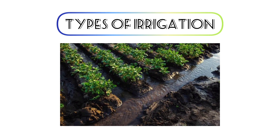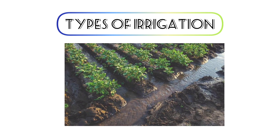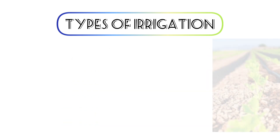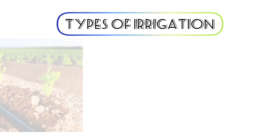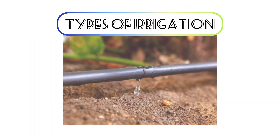The next one is localized irrigation, where water is scattered throughout the land under low pressure. The next one is drip irrigation.